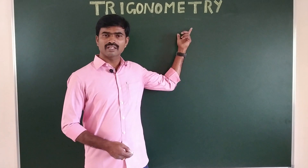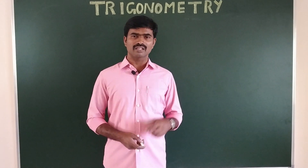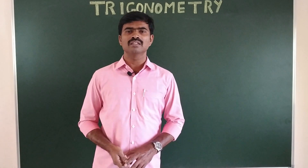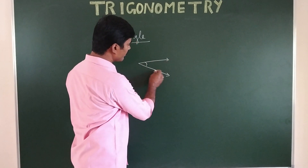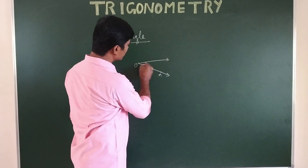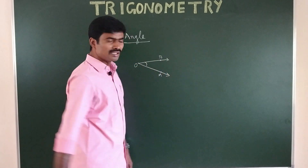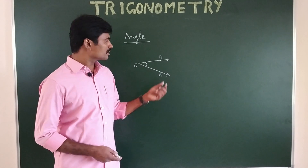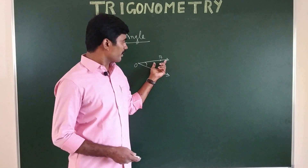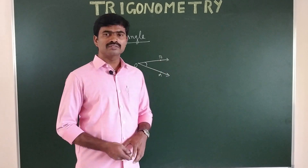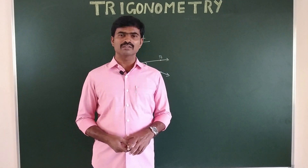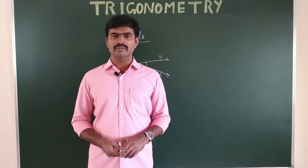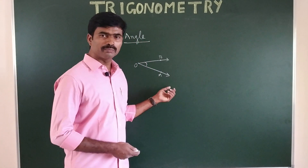Before going to trigonometry, let us learn some basics about angles. What is the definition of an angle? The measurement between two rays having a common endpoint. In ancient times, mathematicians tried to give measurements to find the angle. There are three types of systems: the first is the British system, the second is the French system, and the third is the circular measure, also called the radian measure. First, we are going to the British system.